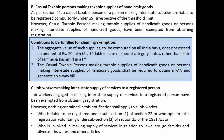A casual taxable person making taxable supply of handicrafted goods is also exempted from registration, provided two conditions are satisfied: (1) the aggregate value of such supply does not exceed Rs. 20 lakh or Rs. 10 lakh as the case may be, and (2) they obtain a PAN and generate an e-way bill. Next, a job worker making interstate supply of services — although section 24 mandates compulsory registration for any person making interstate supply — the government has exempted job workers making interstate supply of services from registration, provided: (1) turnover does not exceed Rs. 20 lakh or Rs. 10 lakh as per section 22.